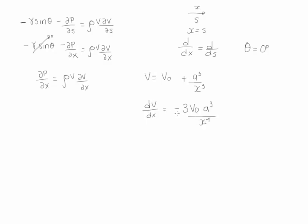Notice that the velocity gradient is negative, meaning the velocity is reduced. As we can see, at x equals negative a, the velocity is equal to zero. Substituting into the pressure gradient equation, we write dP/dx equals negative rho times the velocity profile (V₀ plus a³/x³) times the velocity gradient (negative 3V₀ a³/x⁴).